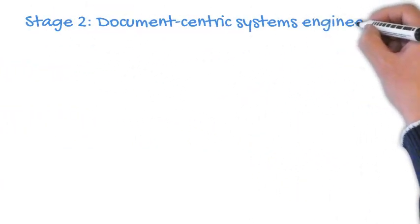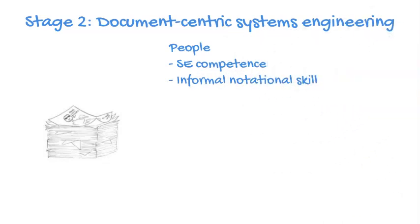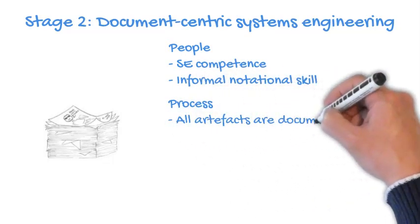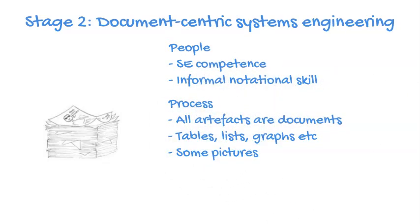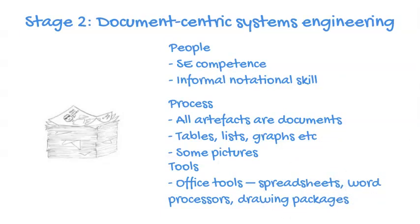Stage 2 is what we refer to as document-centric systems engineering. The people still have systems engineering competence, but they might have some sort of informal notational skill — using flowcharts, mind maps, or very simple UML or SysML. The artefacts are still documents, tables, lists, and graphs, but now pictures start to appear as part of these documents. As a result, the pile of documents may actually get taller. The tools will be the same office tools — spreadsheets, word processors, presentation software — but also simple drawing packages used to illustrate points within the text-based documentation.